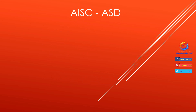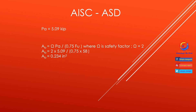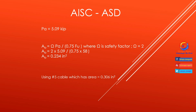For AISC ASD, we have a service load PA equals 5.09 kips. For the required cable area: A equals Ω times PA divided by (0.75 times FU), where Ω is the safety factor in ASD and equals 2. Using A36 grade steel, FU equals 58 KSI. Substituting all values, the result is A equals 0.234 square inches. Number 5 cable has area 0.306 square inches, so we use a cable of 5/8 inch diameter.